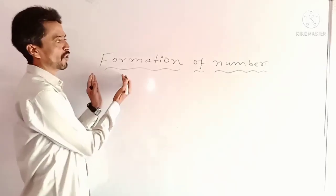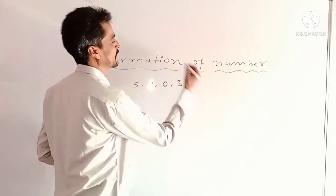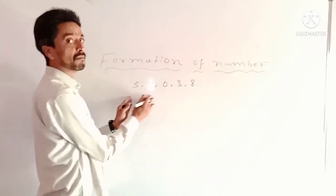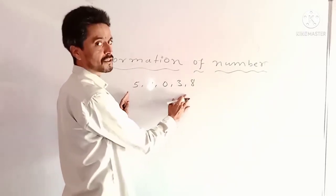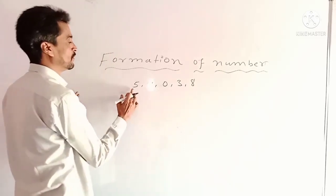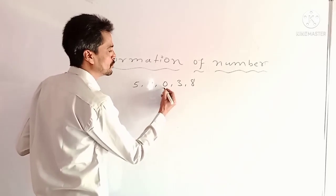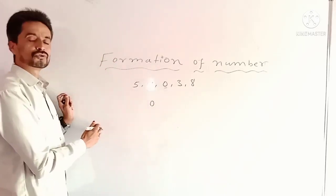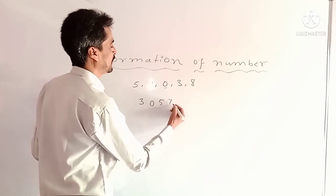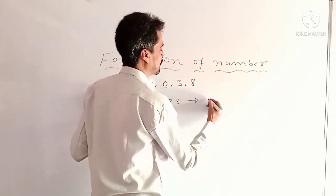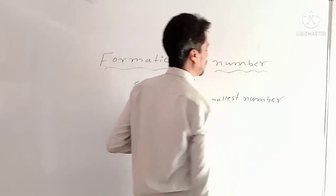Here we are learning about formation of a number by given digits. Suppose we have the digits 5, 7, 0, 3 and 8. These are the given digits and we are forming a number from them. We can form the biggest one and we can form the smallest one. While we form the smallest number from these given digits, we need to go in ascending order. But here there is a 0 — 0 should be in second place. Then using ascending order we get 3, then 5, then 7, and then 8. This is the smallest number by the given digits.